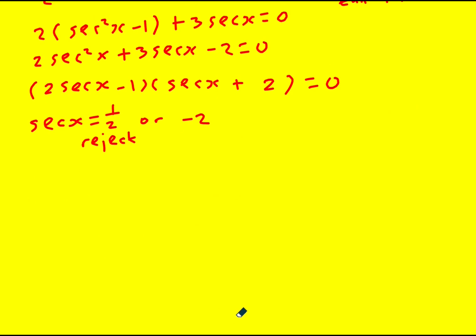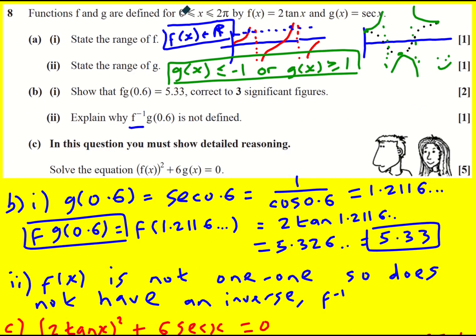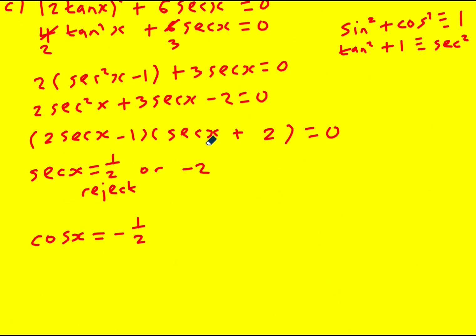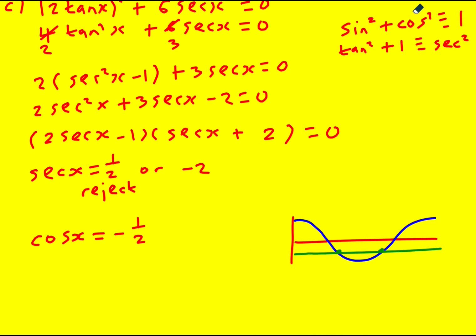And then to solve sec(x) equals minus two, we put it back in terms of cos. So 1/cos(x) is minus two, and cos(x) is going to equal minus 1/2. Remember, we are working in radians, and we've still got this. We're just looking where the functions are defined between zero and 2π. Okay, so I can draw the graph and I can see there's going to be two solutions.